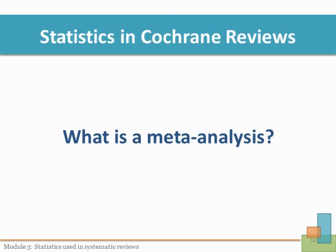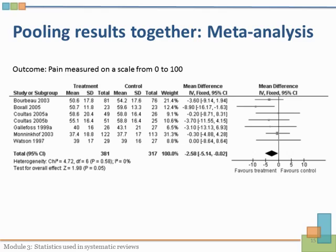In Cochrane systematic reviews, the results from many studies are pulled together in what is called a meta-analysis, and they are pulled together statistically. The graph in this slide is an example of how a meta-analysis is shown graphically. It is not necessary to understand these graphs in detail, but it can be daunting when you see them in Cochrane systematic reviews, so becoming a bit comfortable with what they present is helpful.